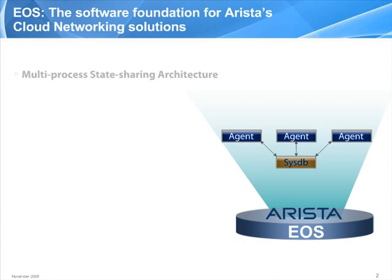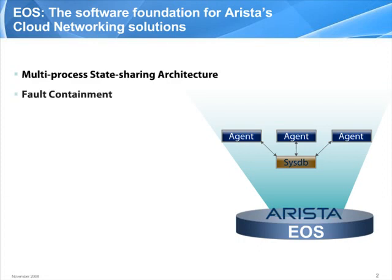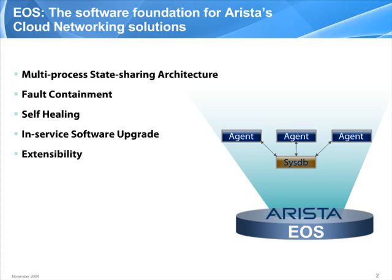Arista EOS has been designed from the ground up to provide maximum possible stability. To do that, we start by running a standard Linux kernel on top of the hardware. By avoiding any extensive modifications to the kernel, we avoid destabilizing it. From there, the question is how to package the rest of the software functionality, and we rely on a mechanism that's as old as Unix itself, which is the address space.